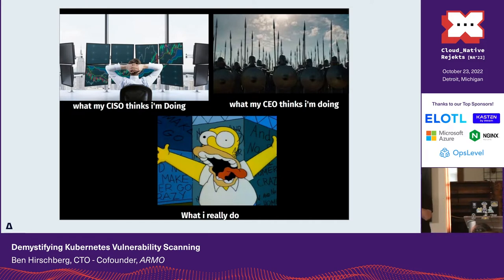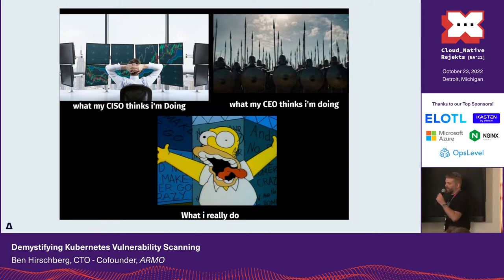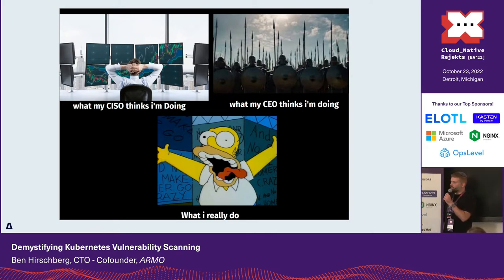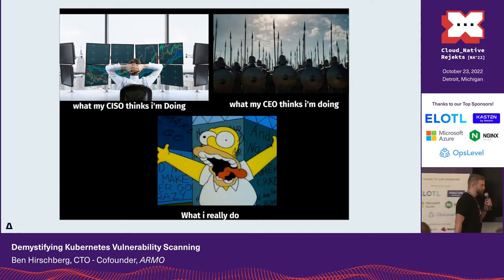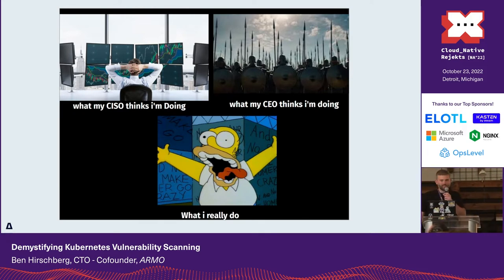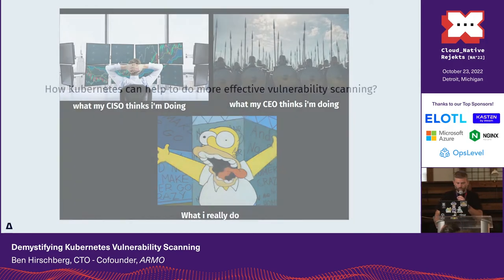We are going to talk about Kubernetes vulnerability scanning. We are scanning images in Kubernetes because we are taught to do so, and most security engineers are feeling overwhelmed with the results. For the latest Elasticsearch official image, you will get more than 50 or around 100 vulnerabilities.